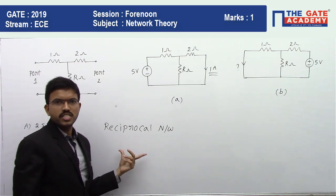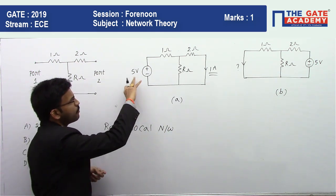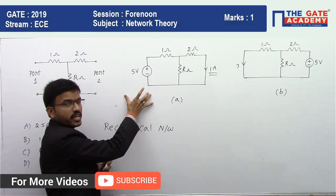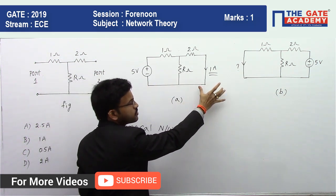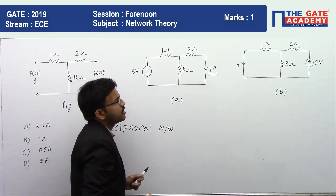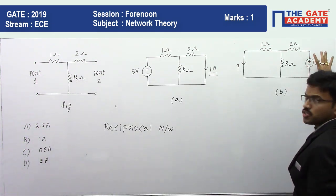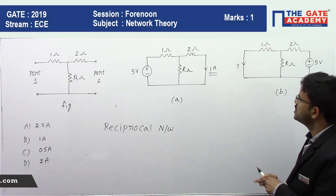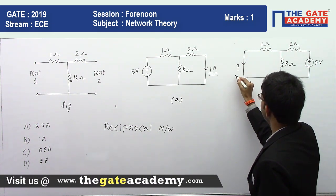Now as per reciprocity theorem, here we have applied a 5 volt source at this port and we got the response of 1 ampere here. Now he has applied 5 volt source here and he is asking the response here. That means you will get the same response, that means 1 ampere.